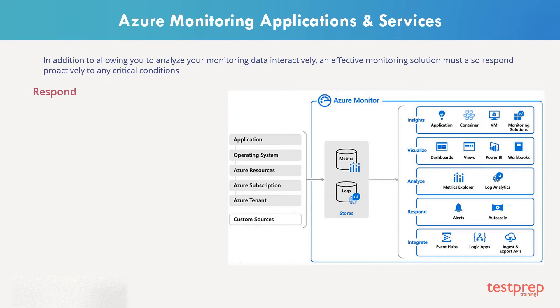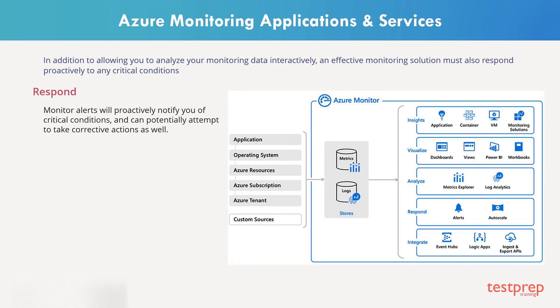In addition to allowing you to analyze your monitoring data interactively, an effective monitoring solution must also respond proactively to any critical conditions. This might involve, for example, sending a text or email to an administrator who is responsible for investigating an issue. Monitor alerts will proactively notify you of critical conditions and can potentially attempt to take corrective actions as well.